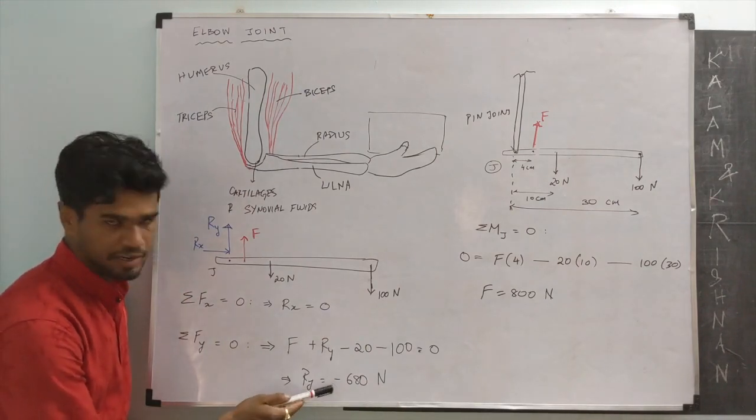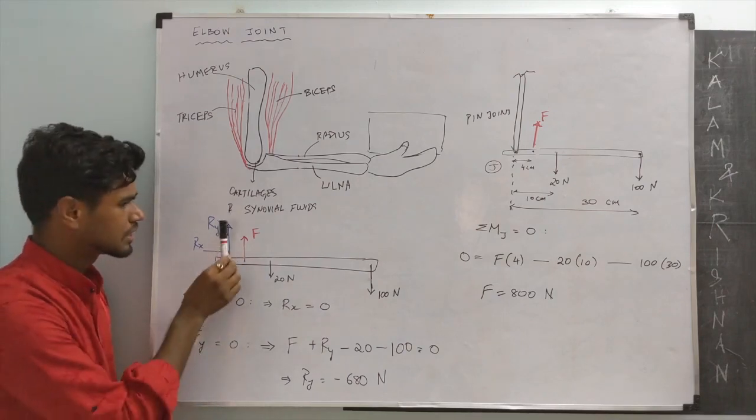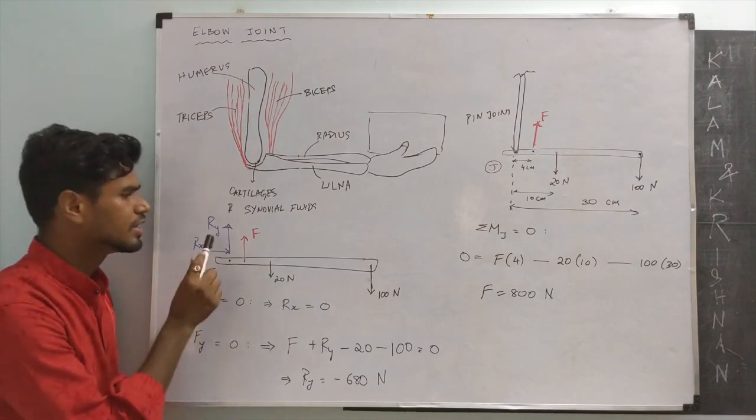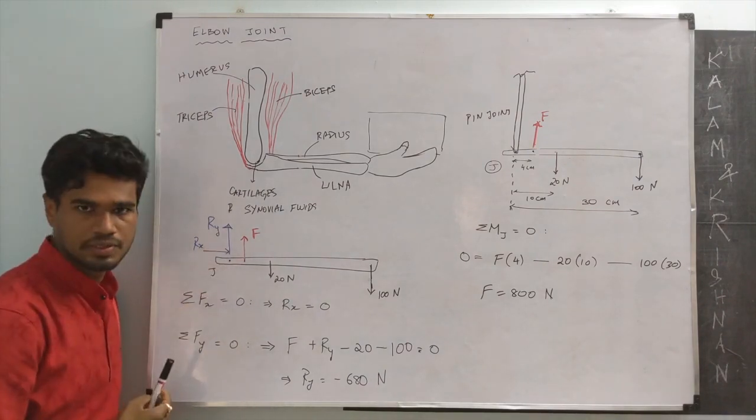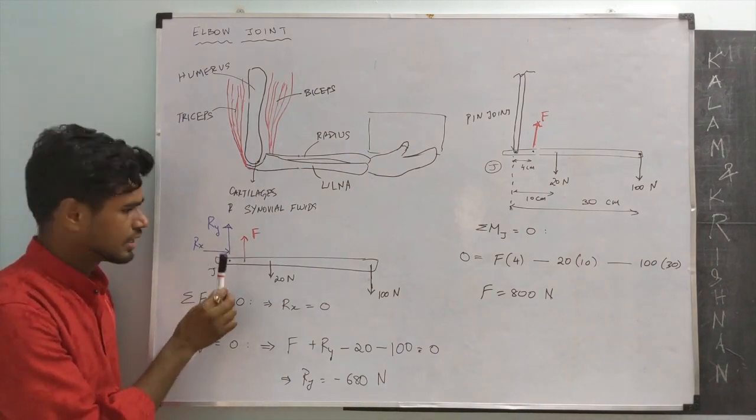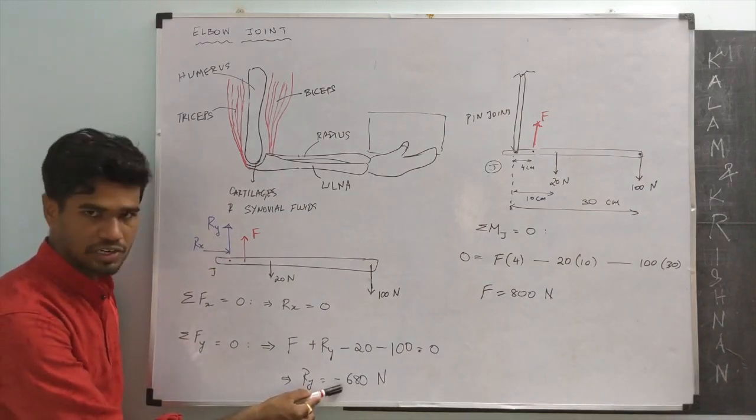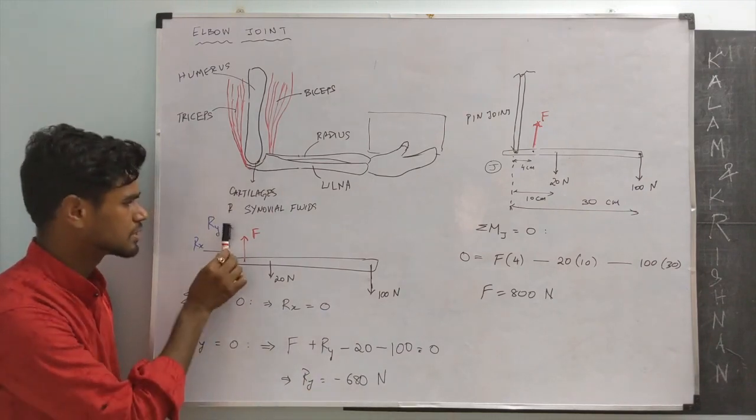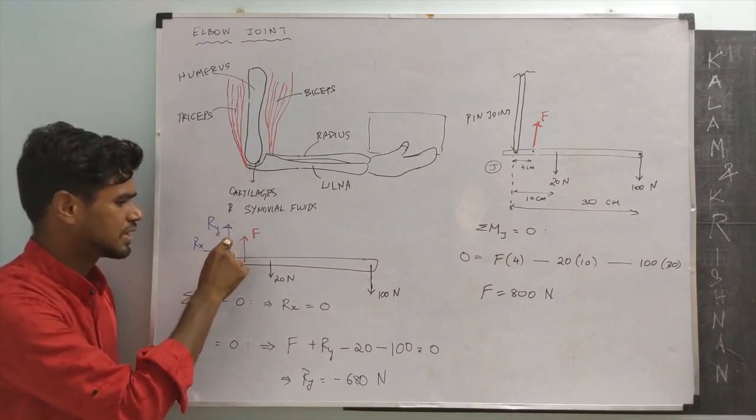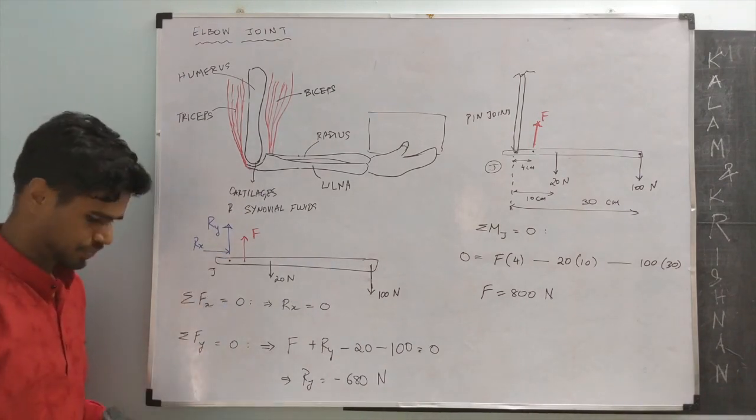Let us look at what this negative number means here. While writing an unknown force, we assumed a direction. We said Ry is going to act in the positive direction. In reality, we did not know whether the force was acting upwards or downwards. When we did not know the direction information about an unknown force, write it down and the equations of equilibrium will tell you the direction. For example, here we assumed it to be positive. When we solved it, we realized it is a negative value. So the force is actually acting along the negative y direction which is downwards.